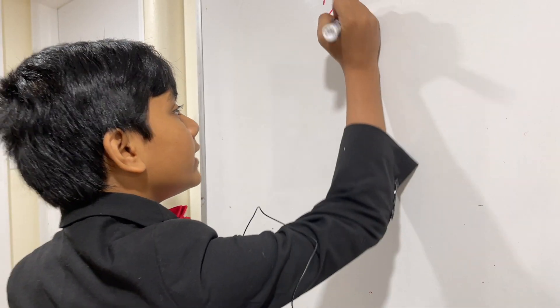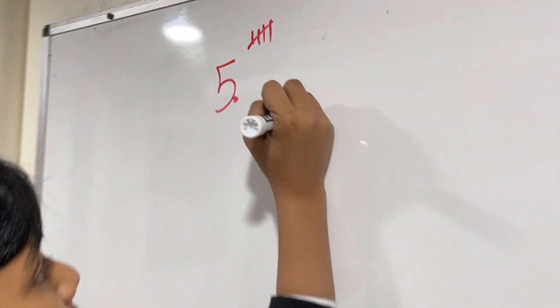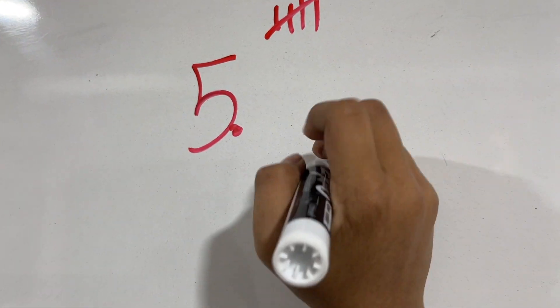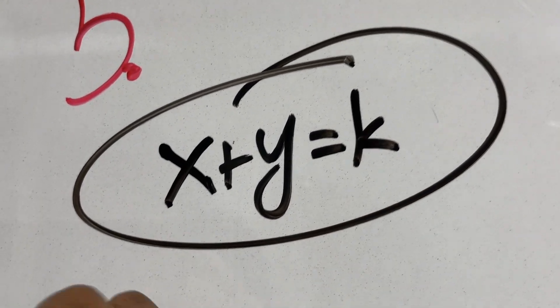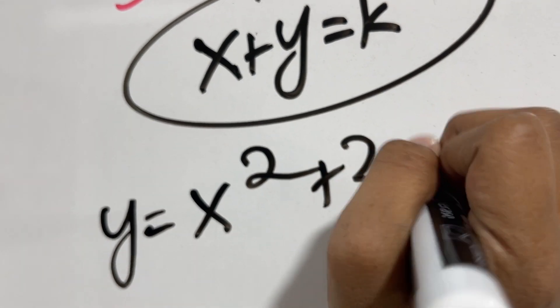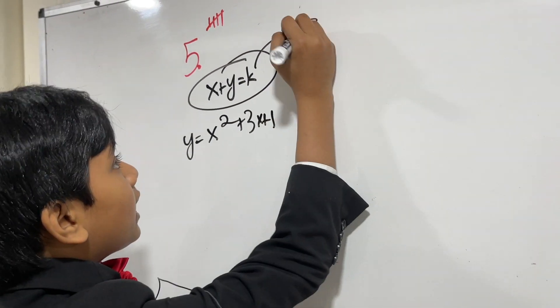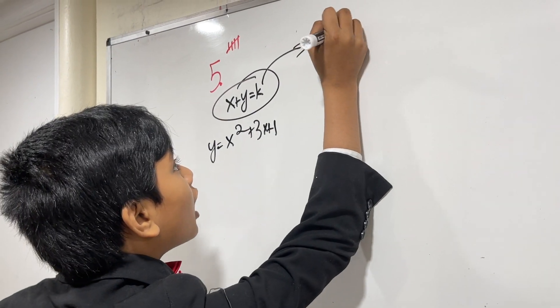Ha-ha! Bet you didn't see that one coming. We have the line x plus y equals k, and this is the tangent line to the function y equals x squared plus 3x plus 1, where k is some unknown magical constant.